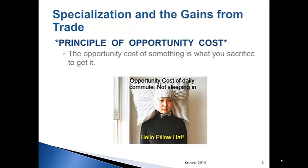The opportunity cost of something is what you sacrifice or give up to get it. The opportunity cost of Johnny Manziel signing autographs, whether he did it for money or not, ended up being half a game's play versus Rice. This opportunity cost is very small and if he had to make the decision all over again, he probably would do it in a heartbeat. Whereas if the opportunity cost had been a full year suspension, he may think twice.